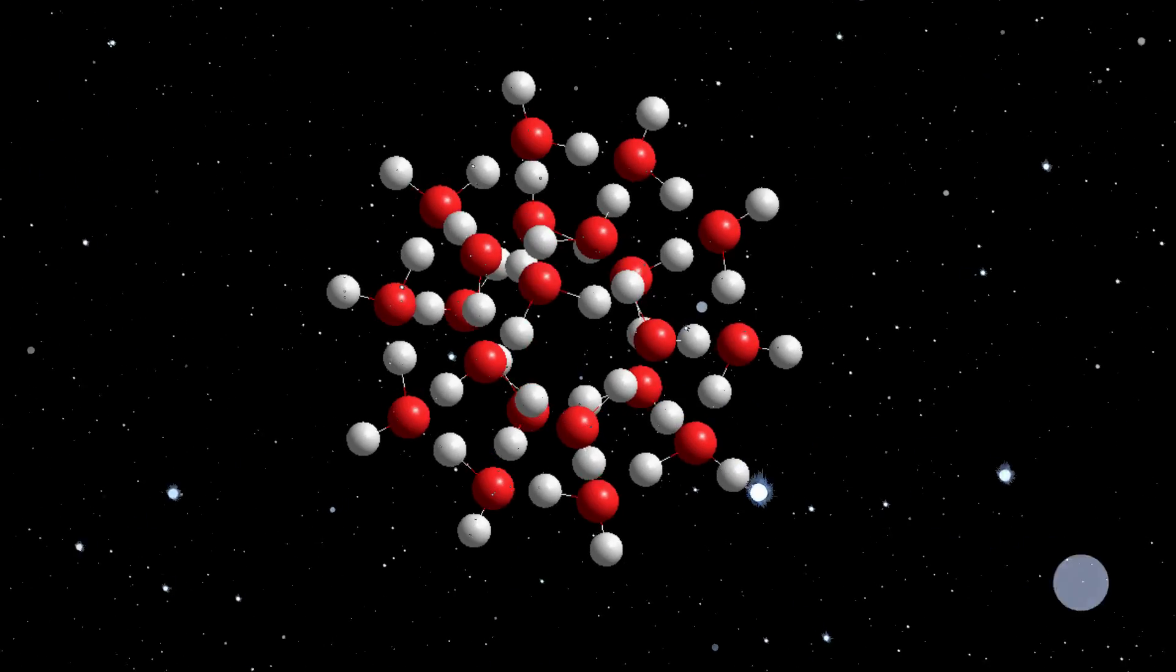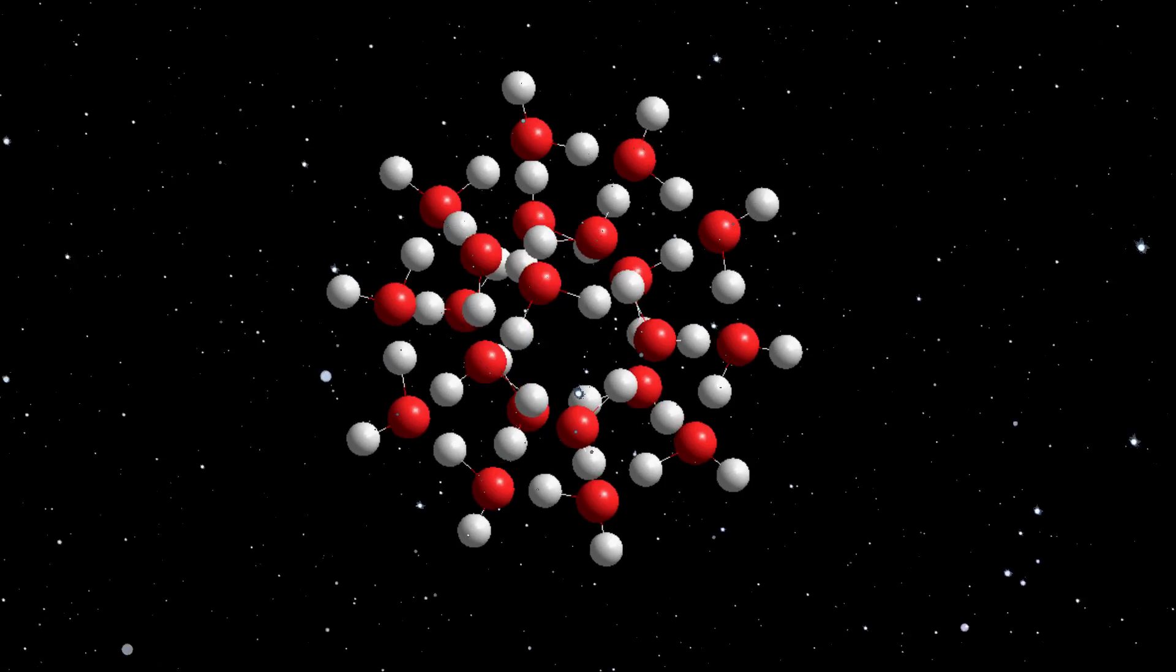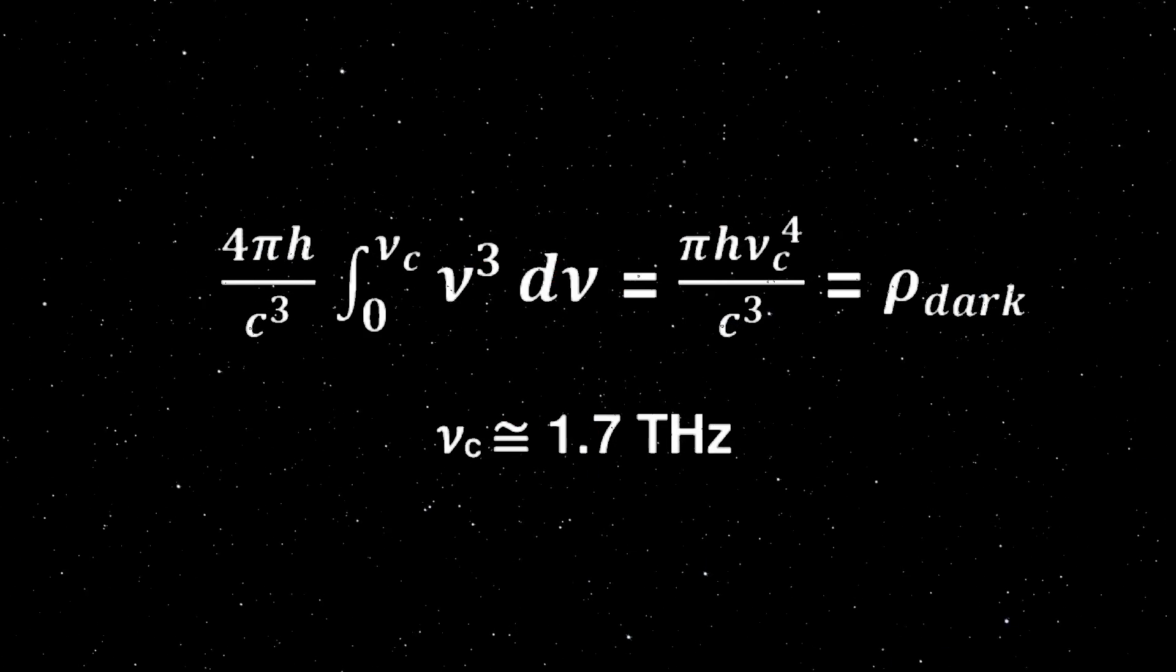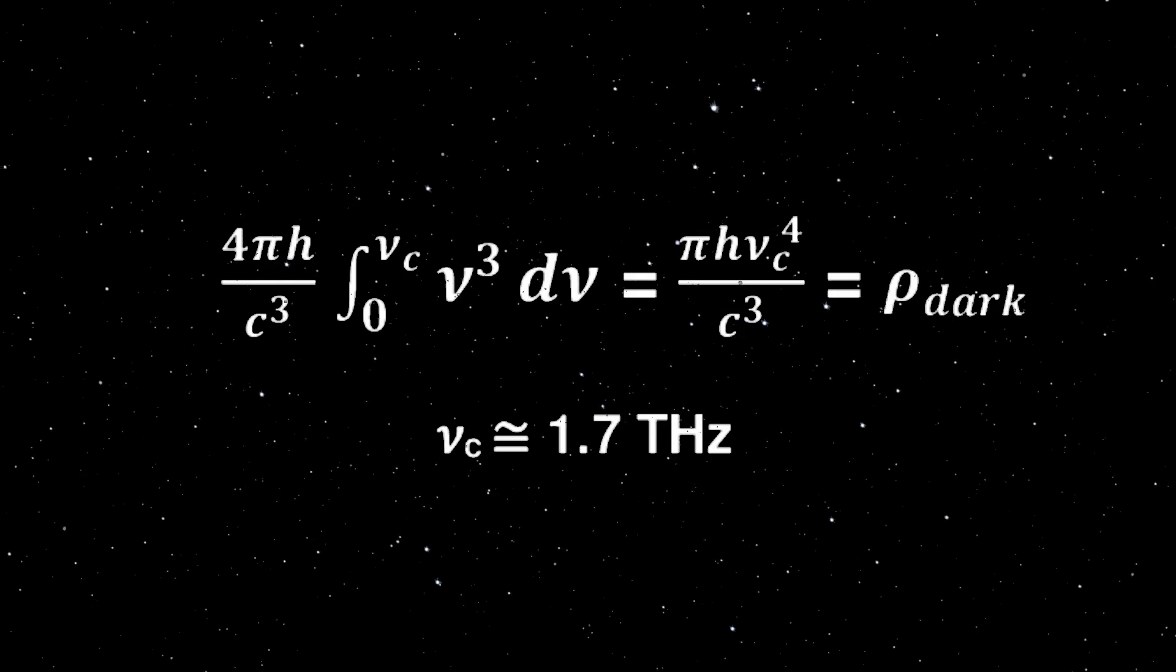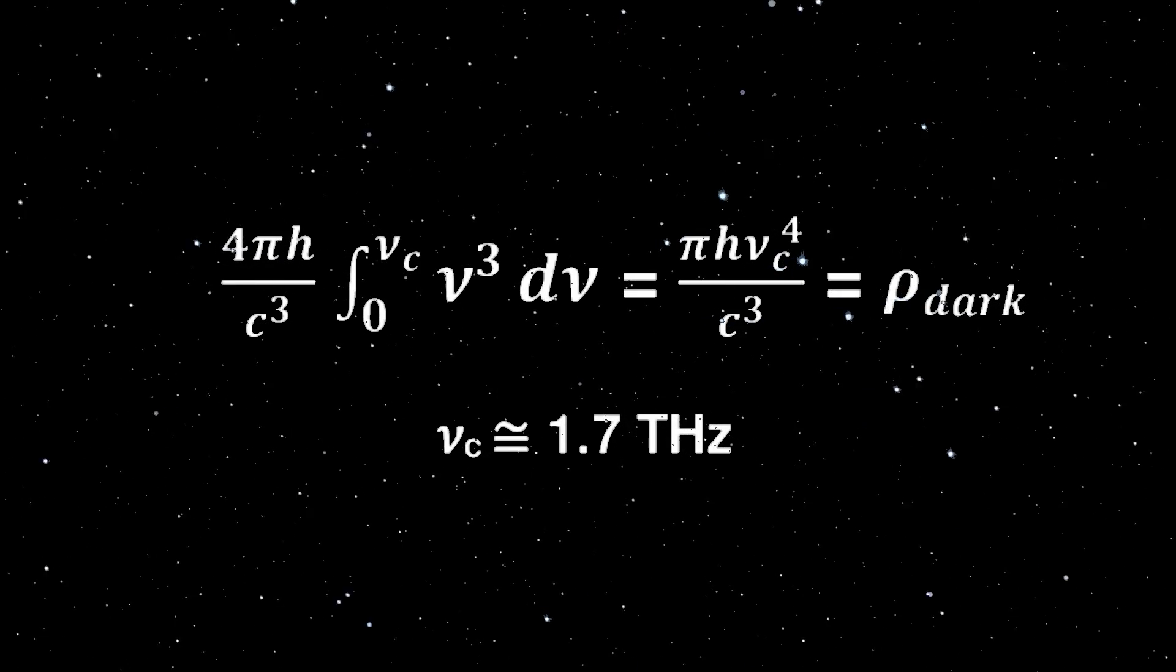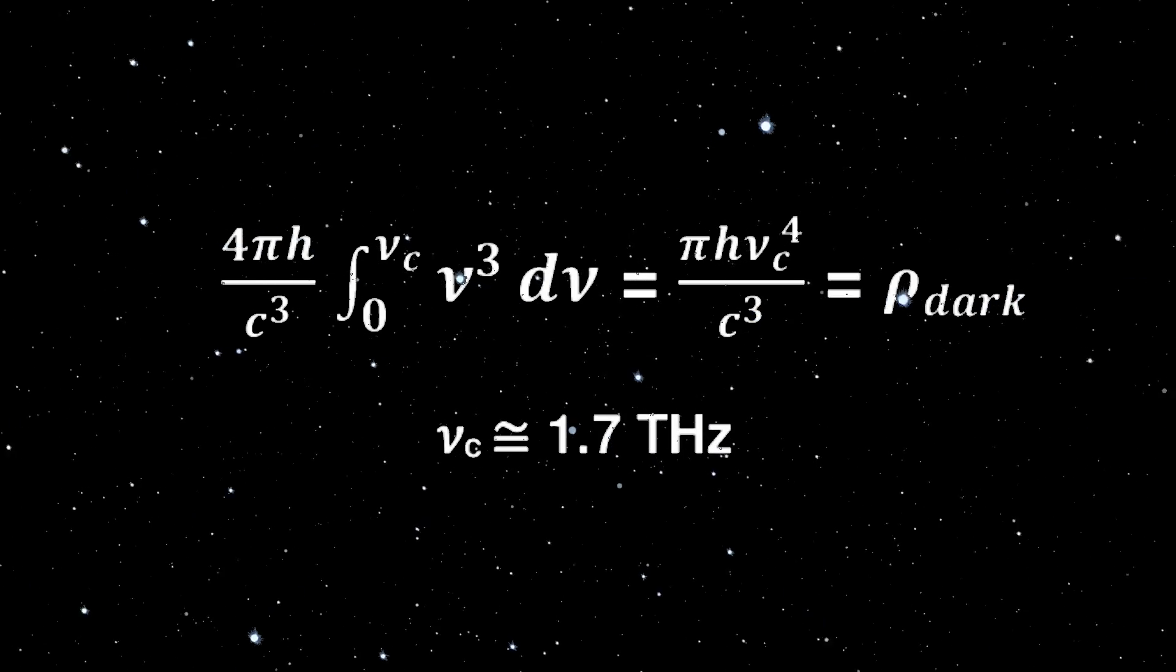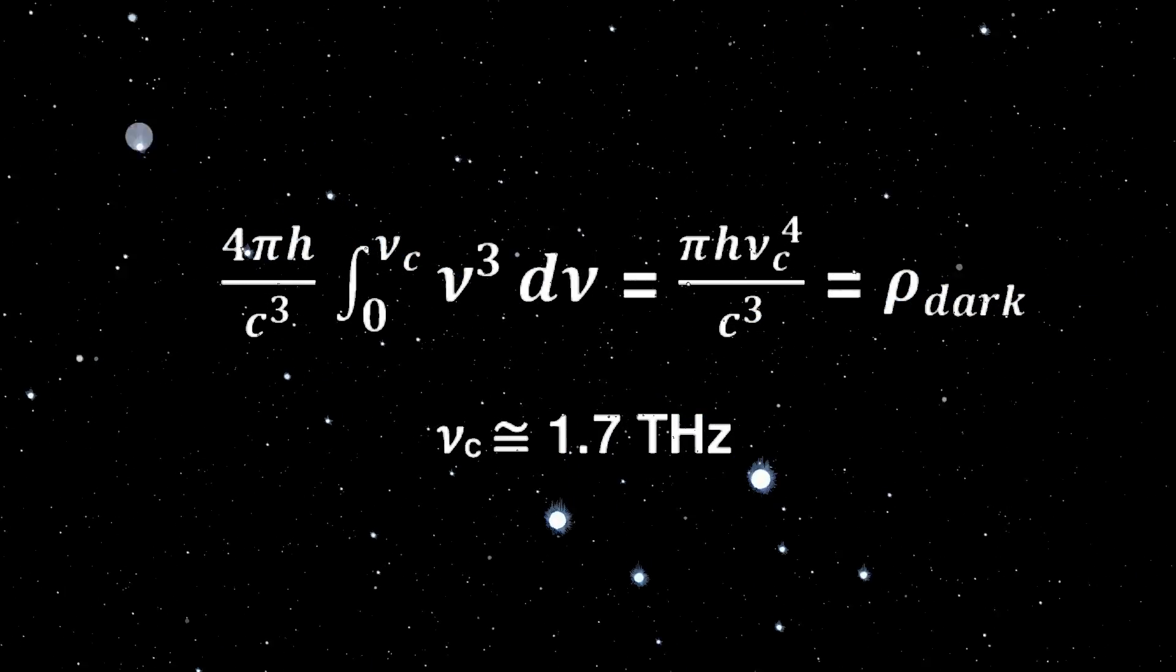For the prominent pentagonal dodecahedral water nanocluster, the cutoff vibrational frequency is approximately 1.7 terahertz. This formula produces the correct small dark energy density and consequently, the small cosmological constant.